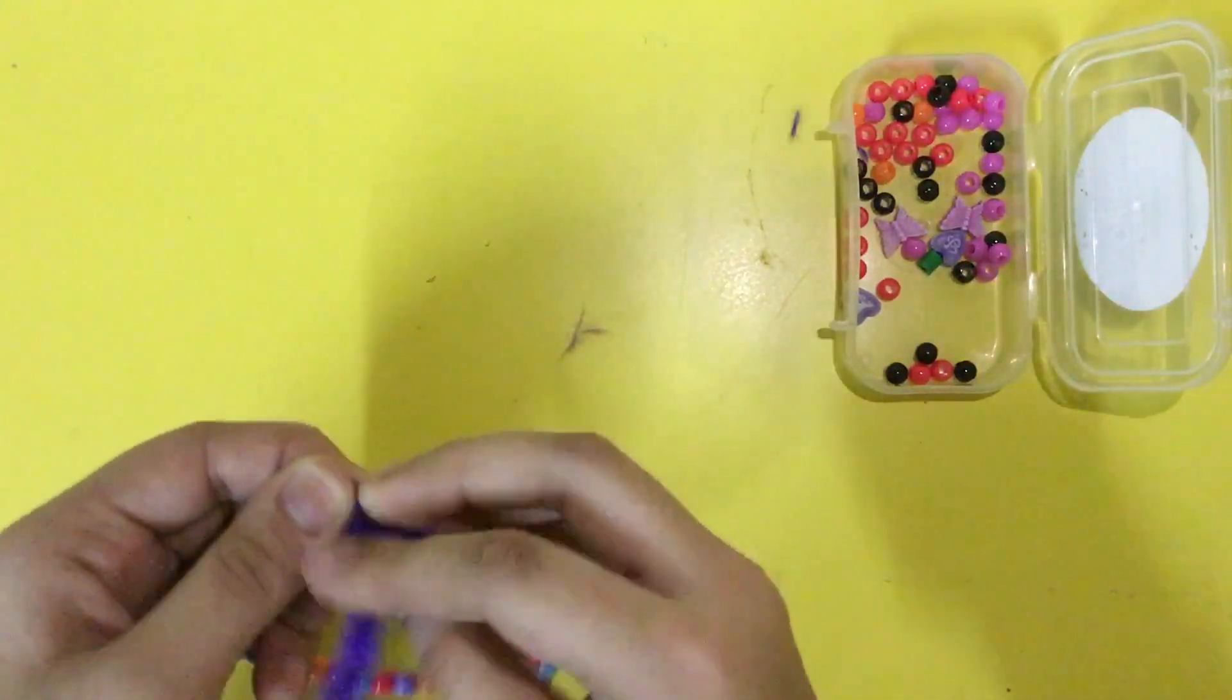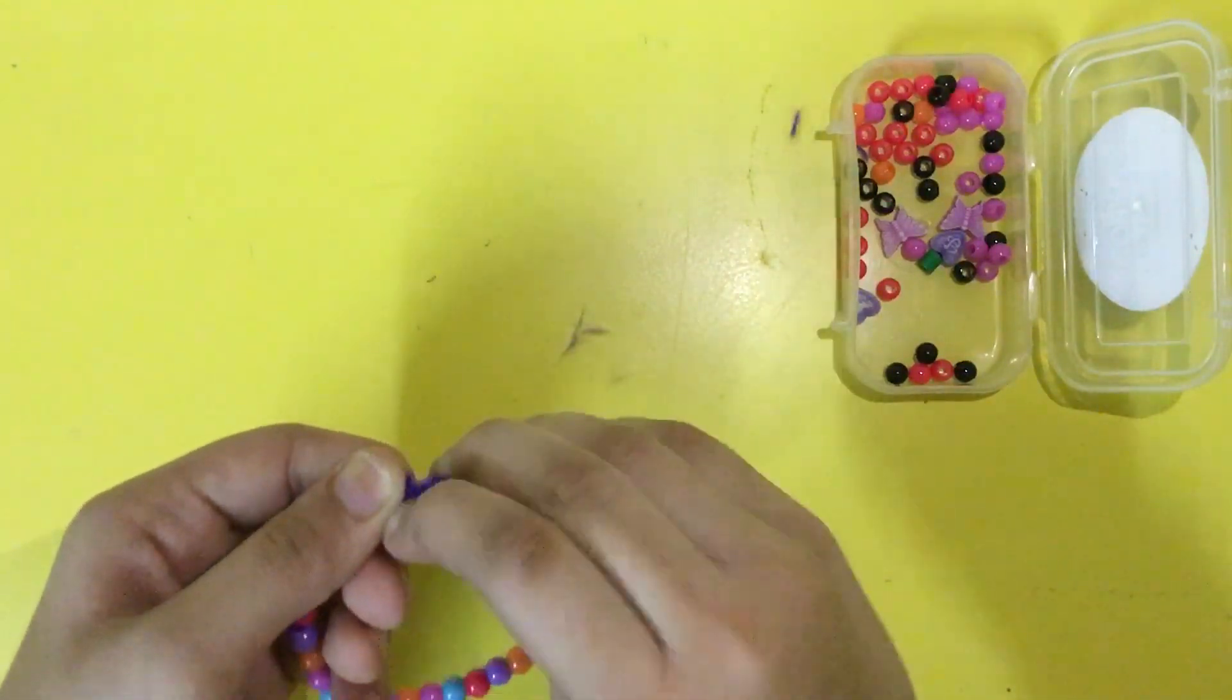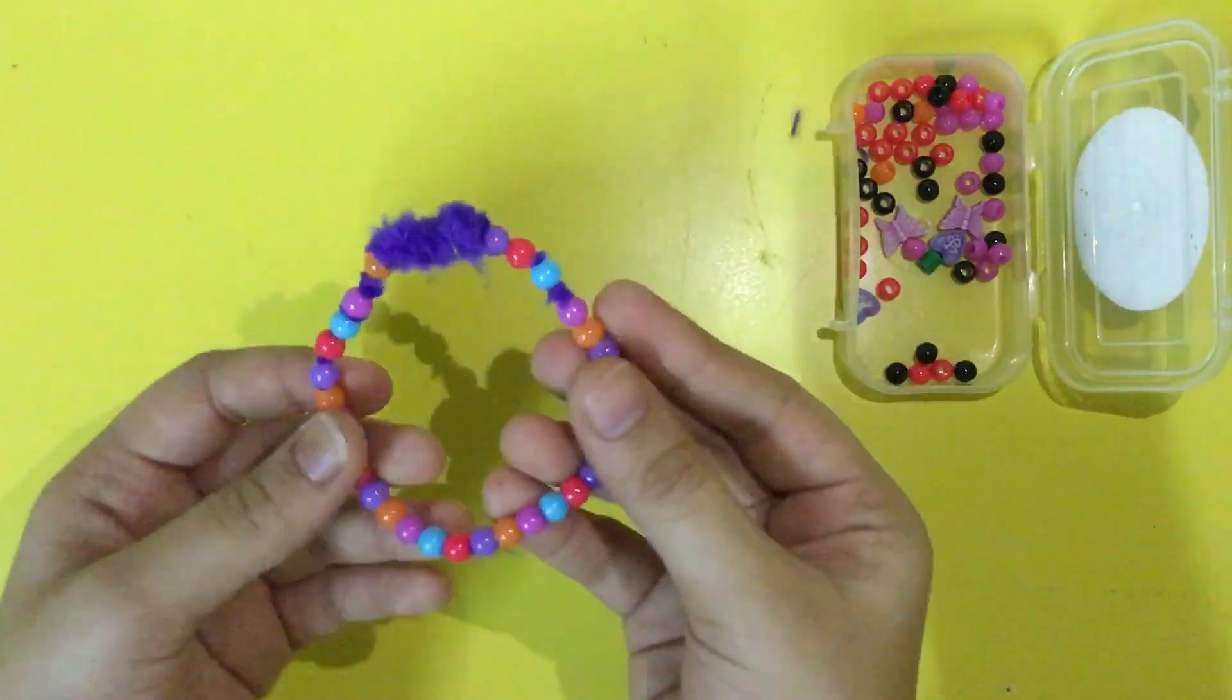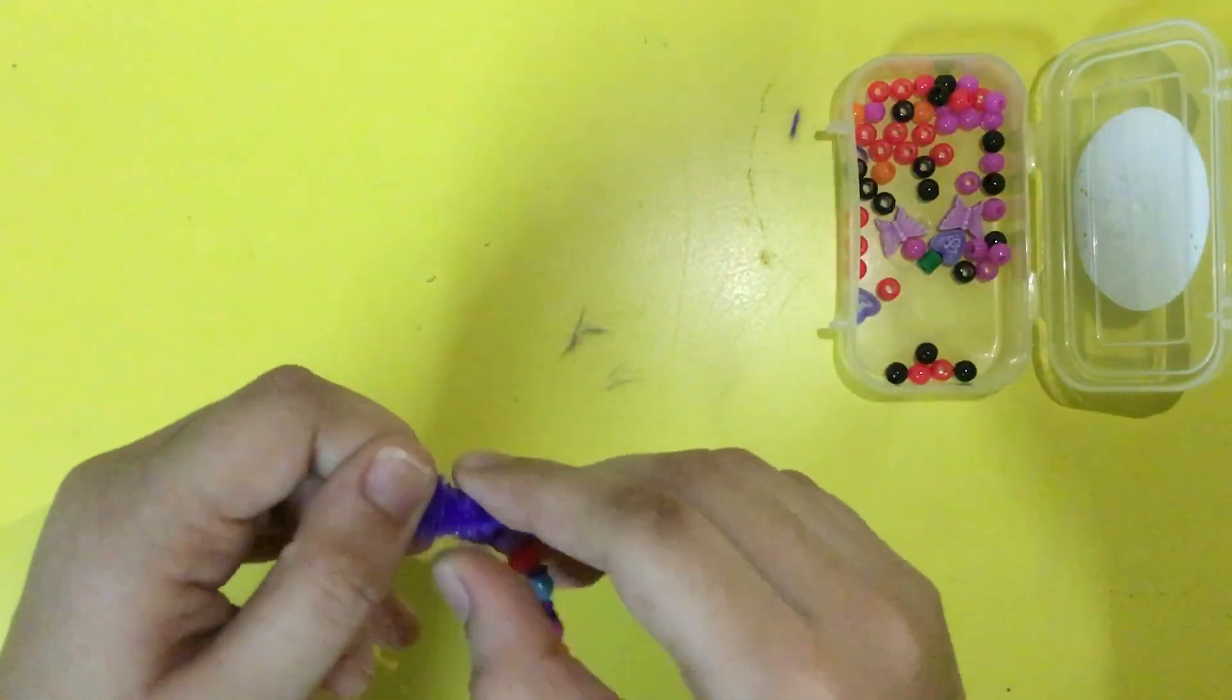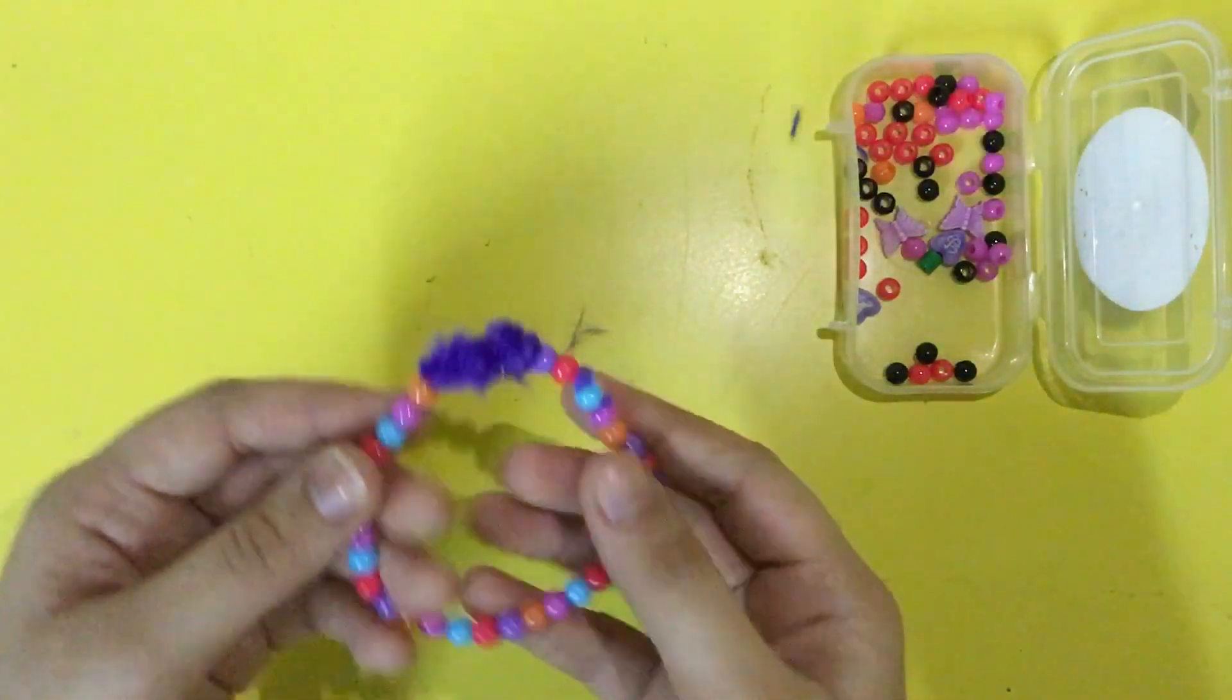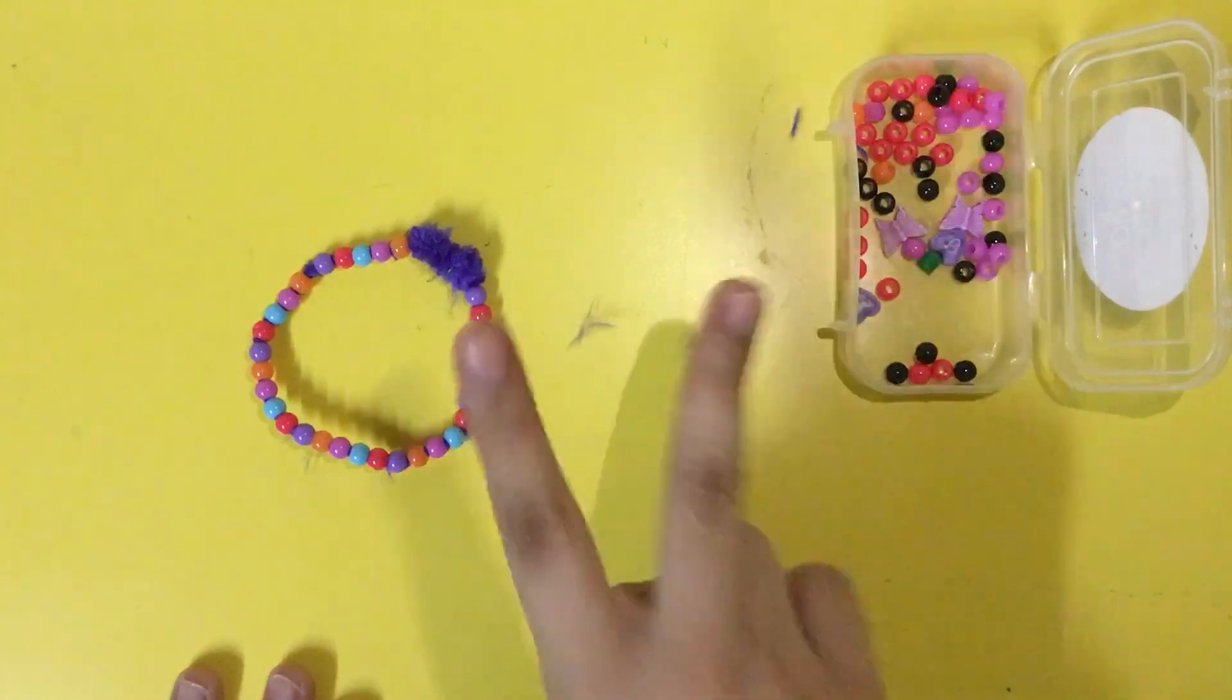If you all can see it properly, you know this is kind of mounted here and it has some sort of a puffy area. It's soft here. So that is the first design. Now we'll get on the second one.